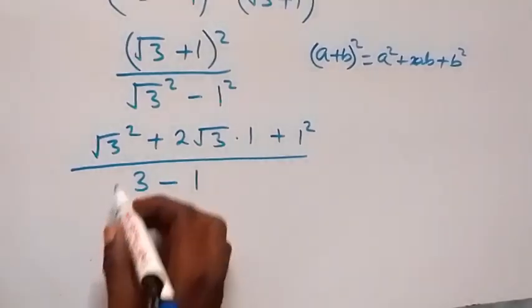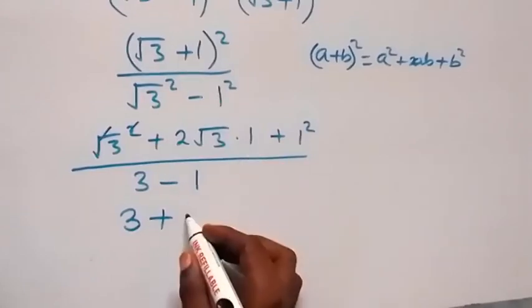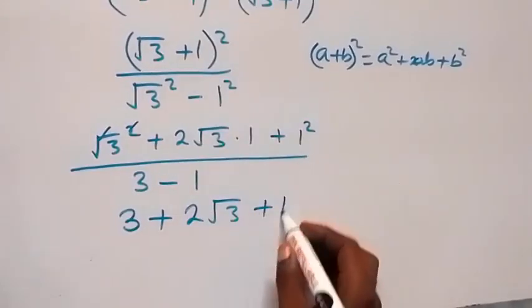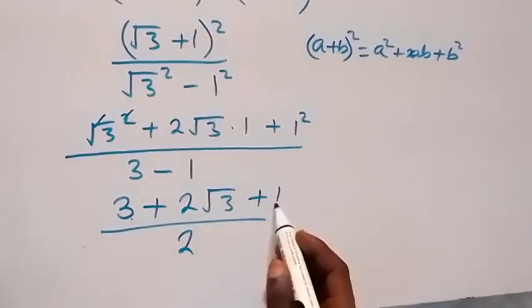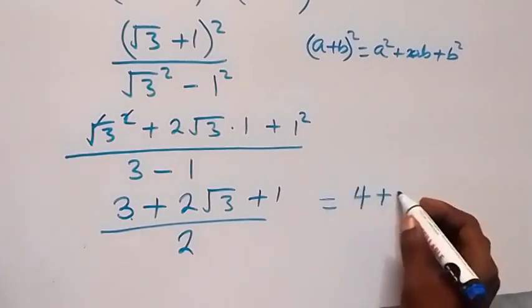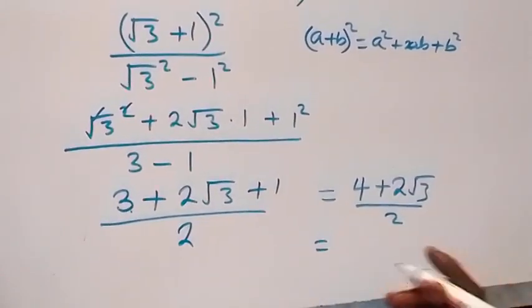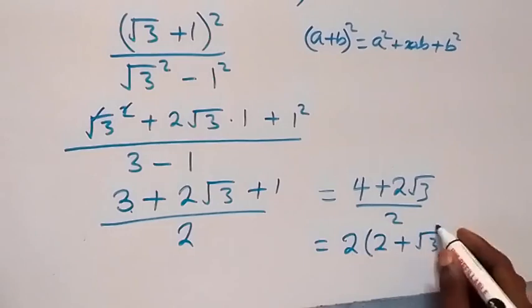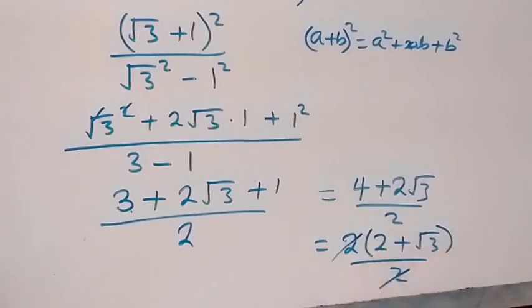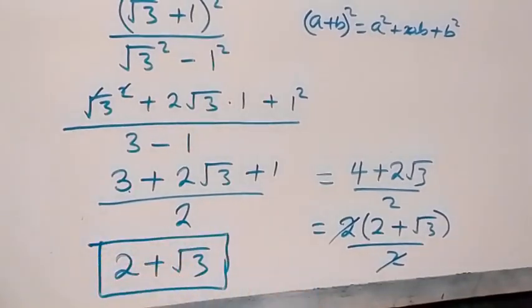From here, square cancels square root so we have 3 plus 2 root 3. We have 3 plus 1 that's 4, so this equals 4 plus 2 root 3 over 2. We factor 2 out to get 2 times (2 plus root 3) over 2. The 2s cancel, and we have 2 plus root 3 as the final answer for the first method.